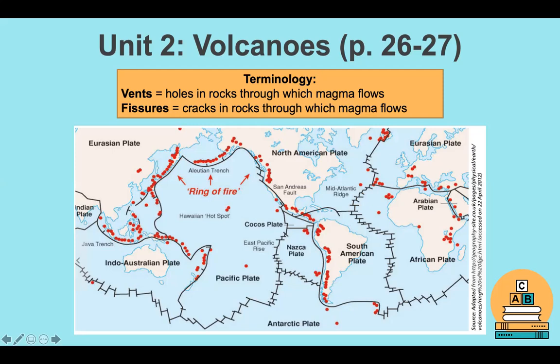it refers to all the boundary lines, or where two or more plates meet. Where plates meet — as we've discussed — that's where divergence, convergence, and transformation occur when plates move. When these plates move and cause friction, high pressure is released, and that's where volcanoes basically occur.